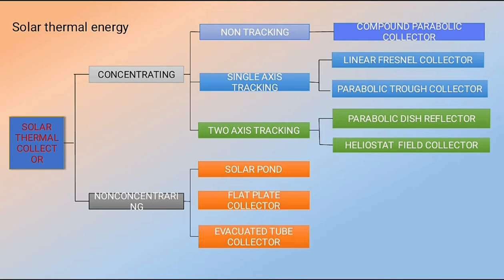Concentrating solar thermal is divided into three tracking categories. Non-tracking systems simply capture and focus solar radiation onto a receiver — an example is the compound parabolic collector. Single-axis tracking systems move in one direction only, and include horizontal, vertical, and tilted trackers. Examples are the linear Fresnel collector and the parabolic trough collector.